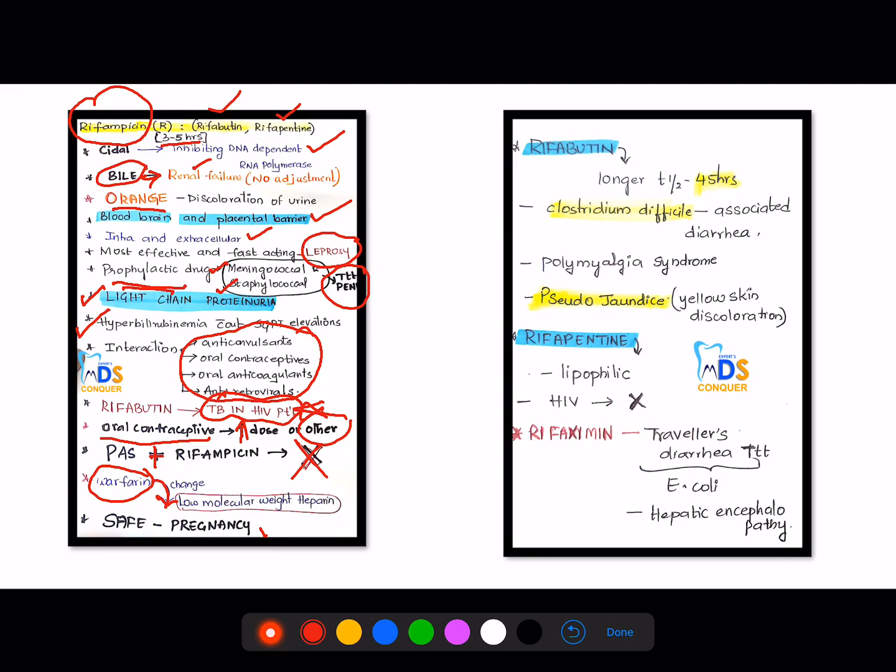Then it is the safest drug in pregnancy. Then other types of drugs like rifampicin are rifabutin and rifapentine.